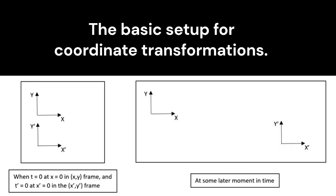Here's the basic setup. There's two coordinate frames. One is called the unprimed frame, xy, and the other is the primed frame, x prime, y prime. When t equals 0 at x equals 0 in the xy frame, the unprimed frame, and t prime equals 0 at x prime equals 0 in the primed frame, that's the starting point for this formal presentation.